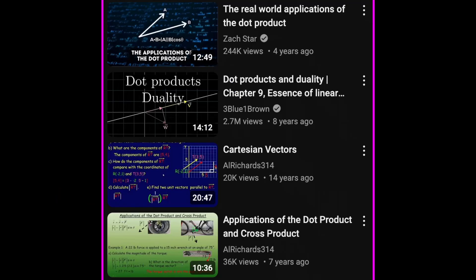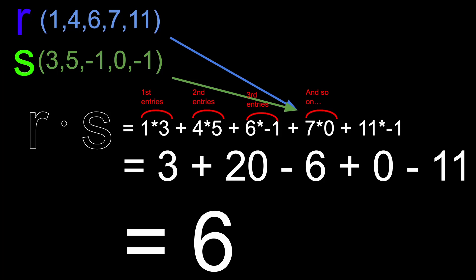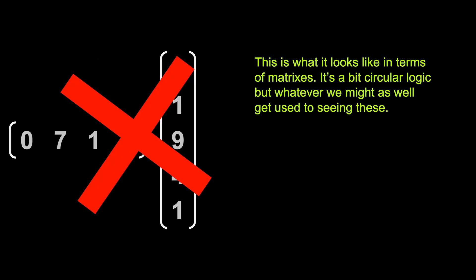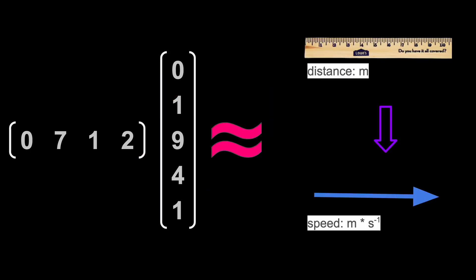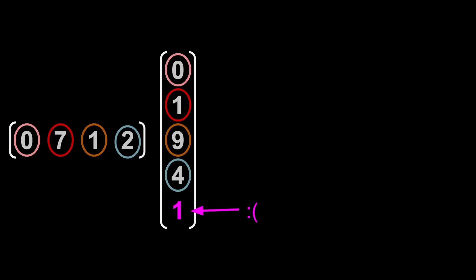Now, dot products are a lot of things, including useful, but we'll get into that later. In basic terms, the dot product of two ordered sets of the same size is the sum of the products of each index. You can't take the dot product of unlike sized arrays because that would be like trying to find the perimeter of a cylinder or convert meters to miles per hour - you'll leave a dimension hanging.